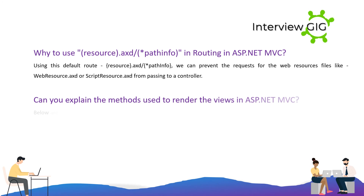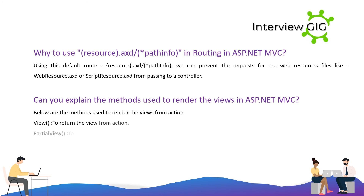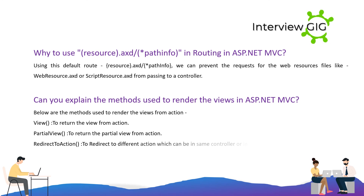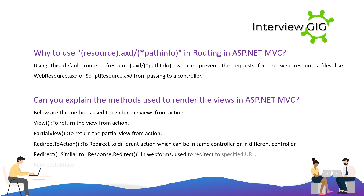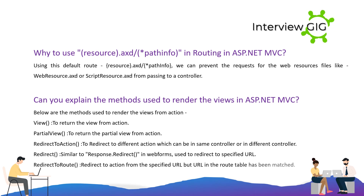Can you explain the methods used to render views in ASP.NET MVC? Below are the methods used to render views from an action: View — to return the view from action; PartialView — to return the partial view from action; RedirectToAction — to redirect to a different action, which can be in the same controller or a different controller; Redirect — similar to Response.Redirect in web forms, used to redirect to a specified URL; RedirectToRoute — redirects to an action from a specified URL where the URL in the route table has been matched.